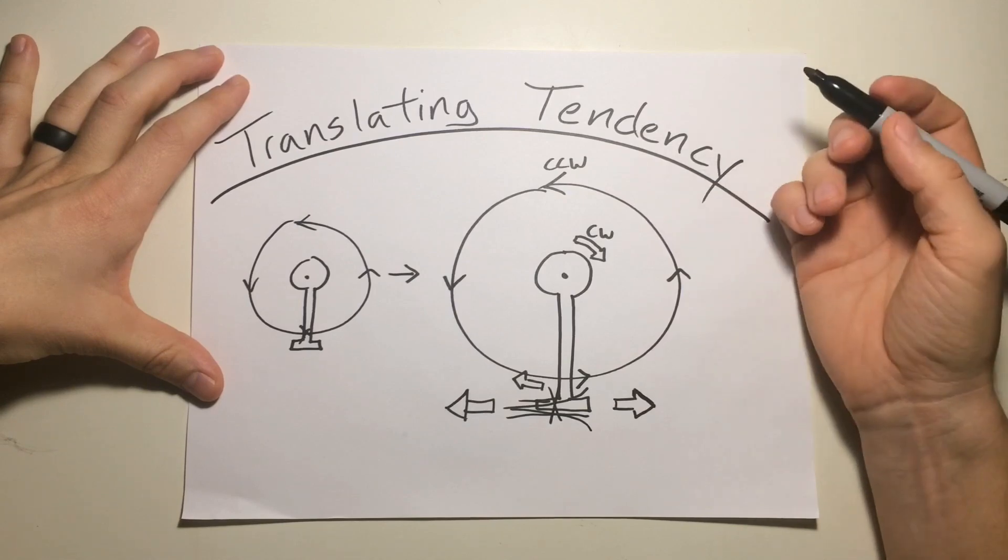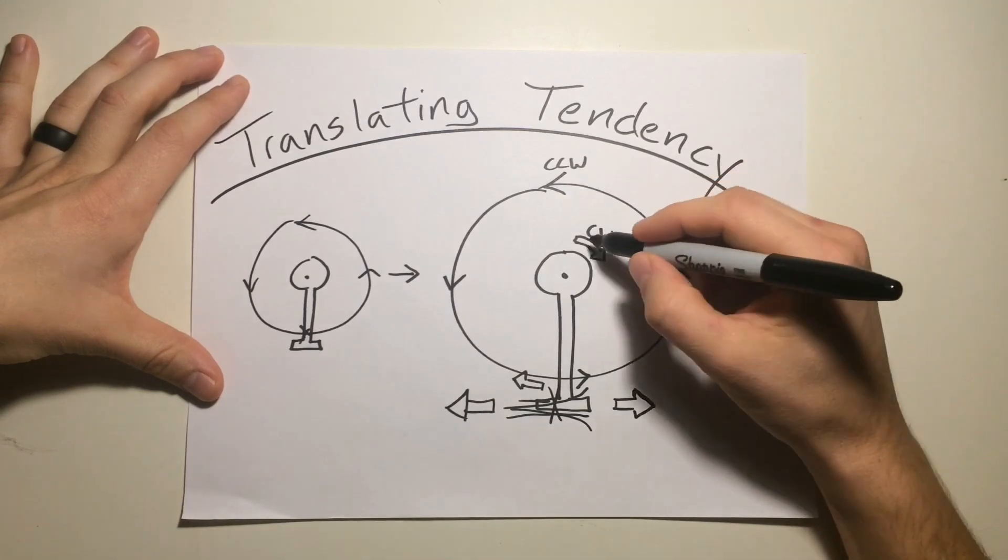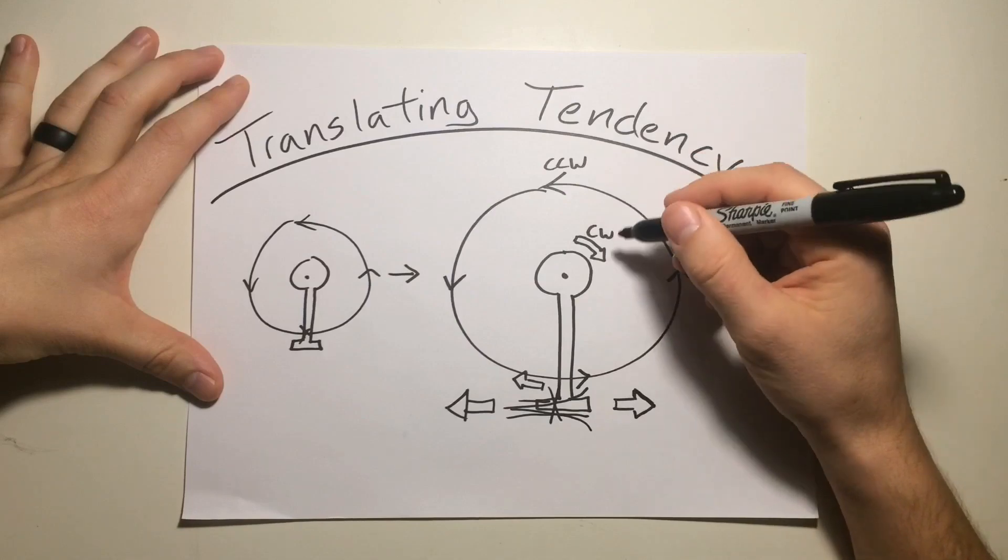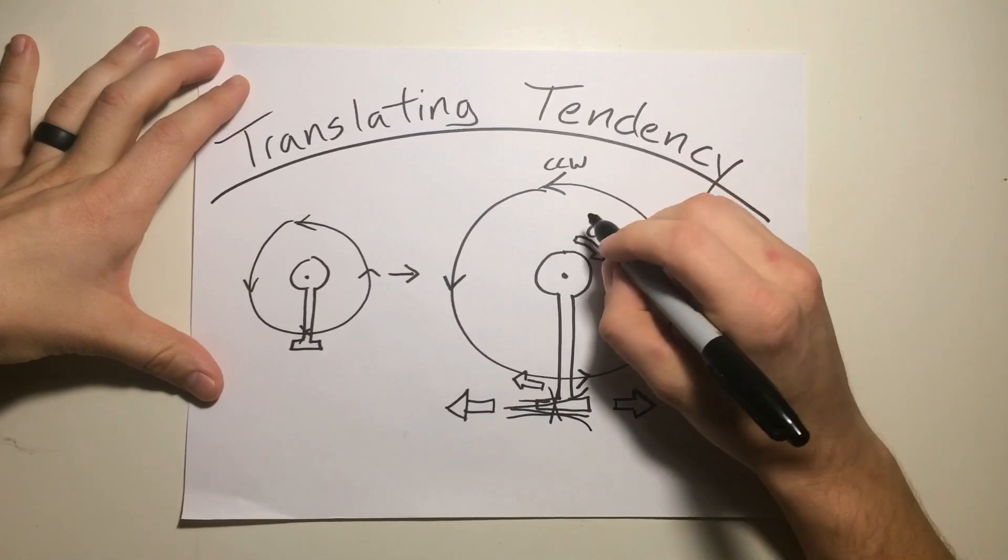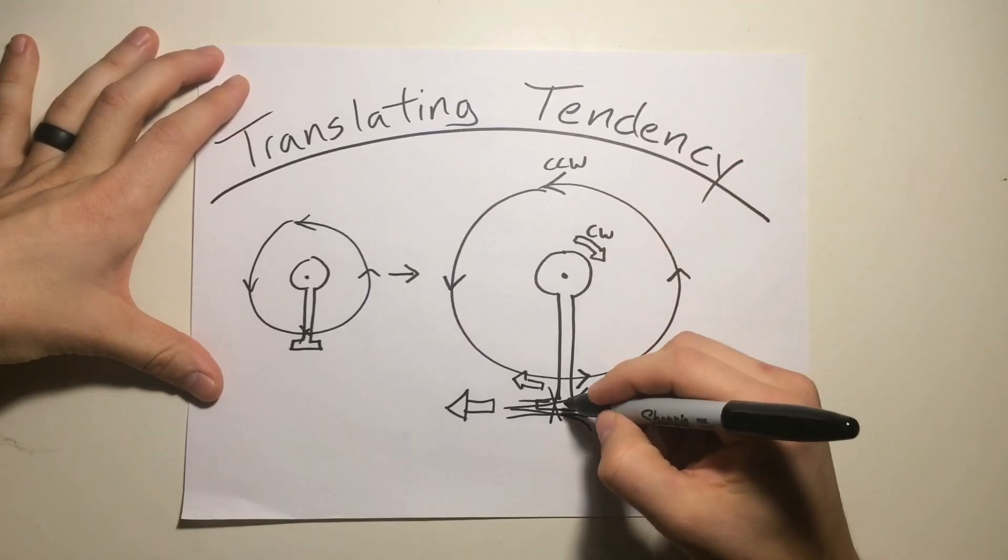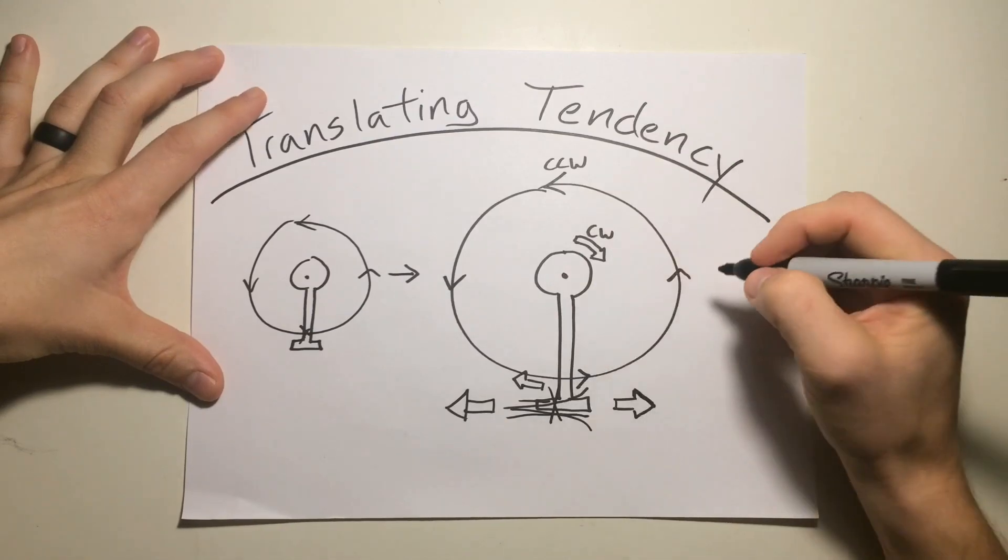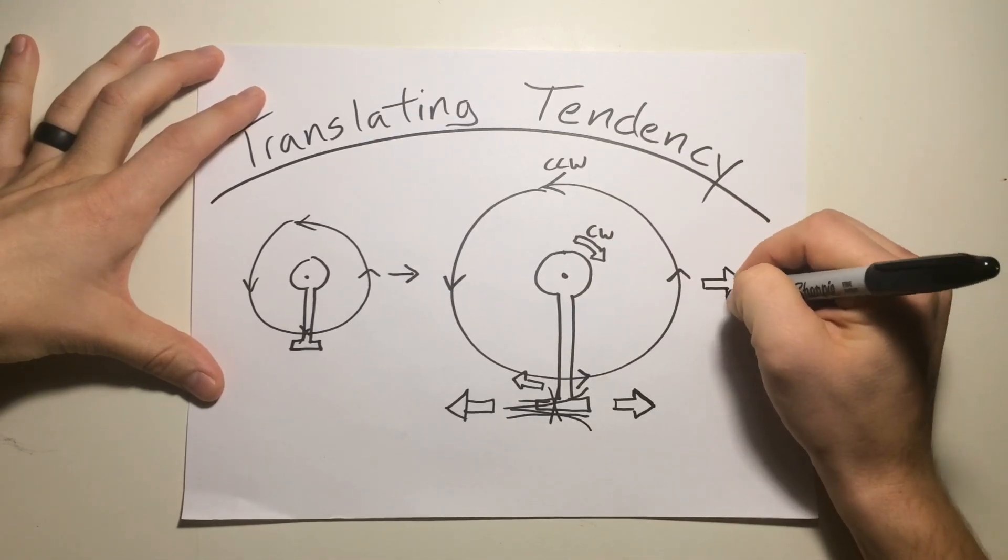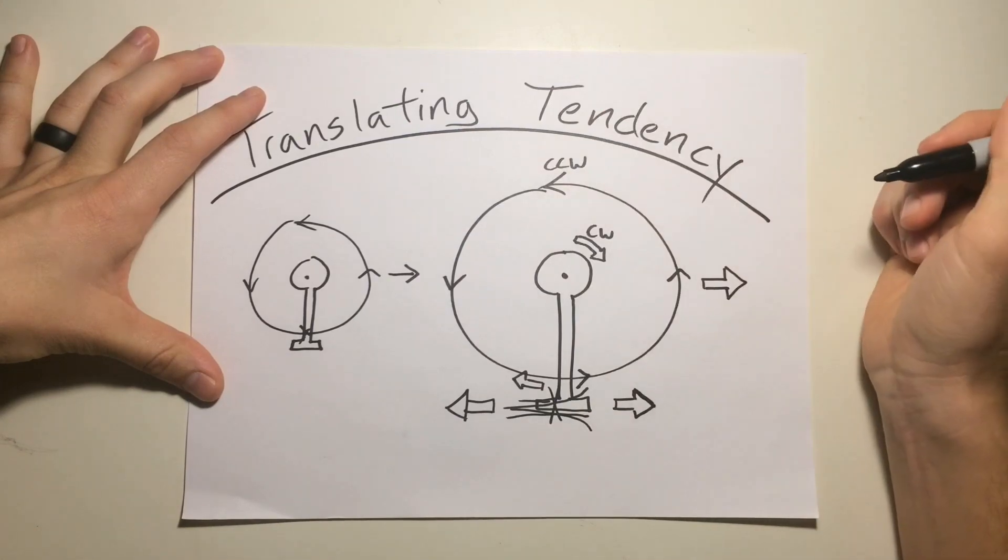But because of that, now we have two things working against us. We have the main rotor, or correction, the nose of the fuselage wanting to turn to the right, the tail rotor being pushed to the right, and that manifests as the entire helicopter drifting to the right, and that is translating tendency.